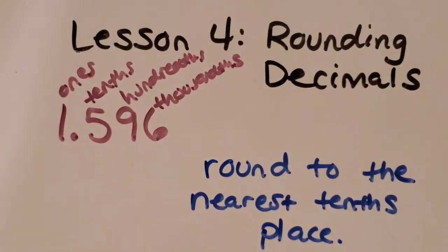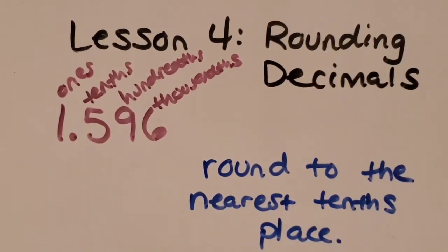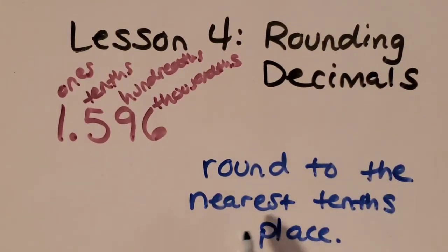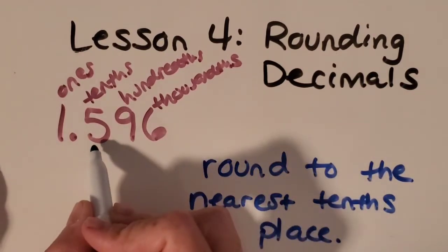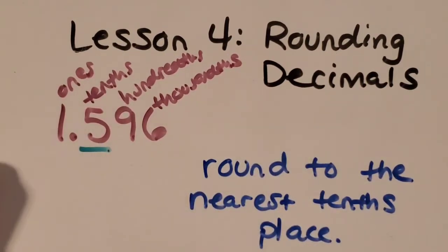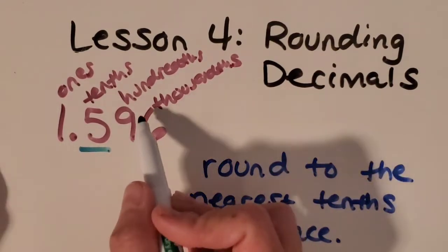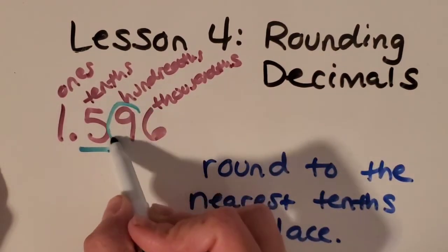Okay, now that we've rounded to the nearest whole number, what if I asked you to round to the nearest tenths place? Okay, so the first thing you want to do is underline the place I'm asking you to round. So the tenths place I'm going to underline. Okay, then I'm going to circle the place to the right. So the hundredths place in this case.